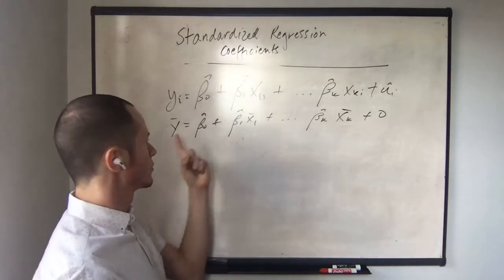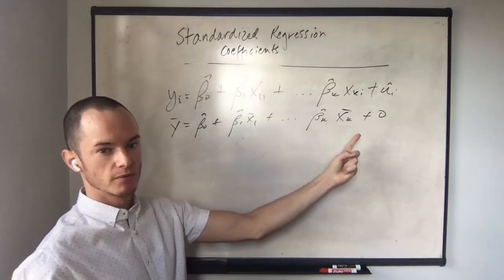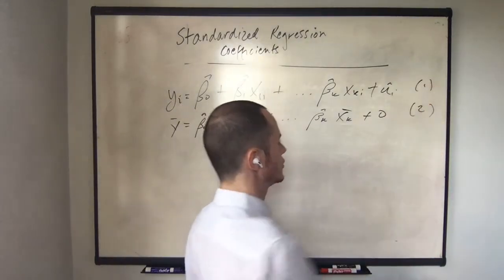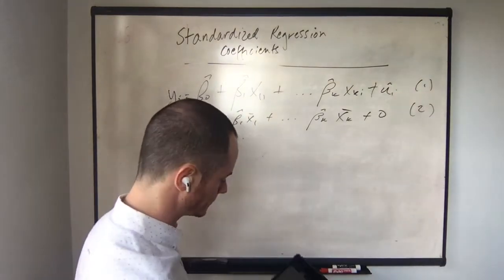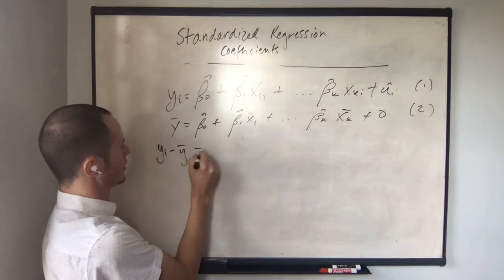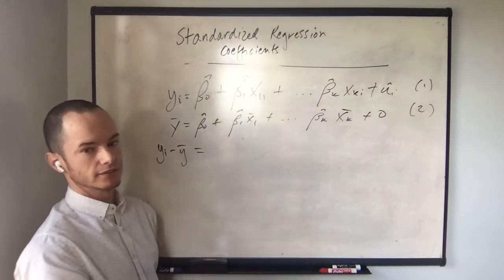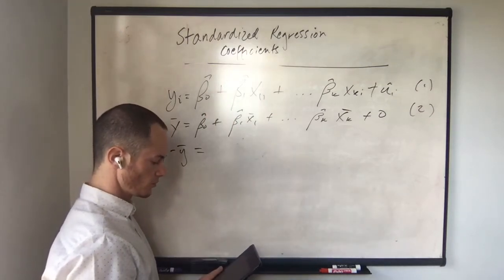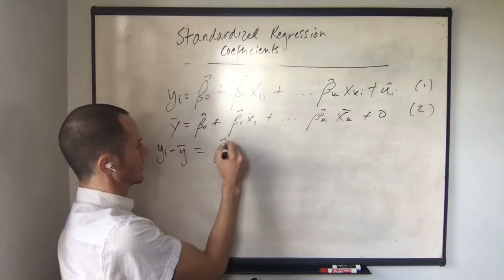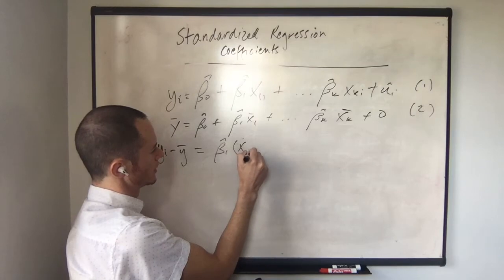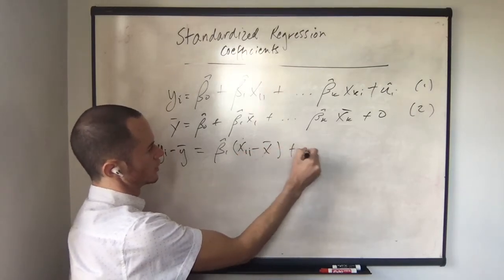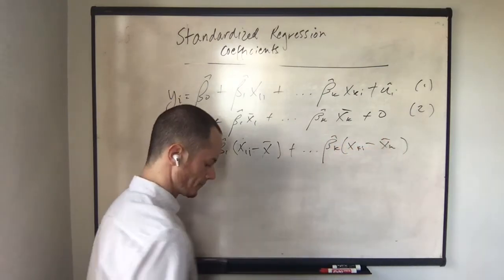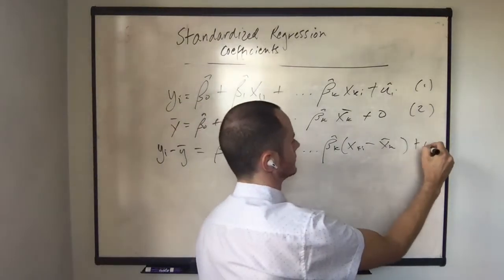We can write this equation for the sample means: y-bar equals beta-naught-hat plus beta-1-hat times x1-bar through beta-k-hat times xk-bar, plus zero, because the mean of ui is zero. This holds because the estimated regression equation holds for the sample means. Subtracting equation 2 from equation 1, we have yi minus y-bar, the beta-naught terms drop out, and we're left with beta-1-hat times (x1i minus x1-bar) through beta-k-hat times (xki minus xk-bar), plus ui-hat.